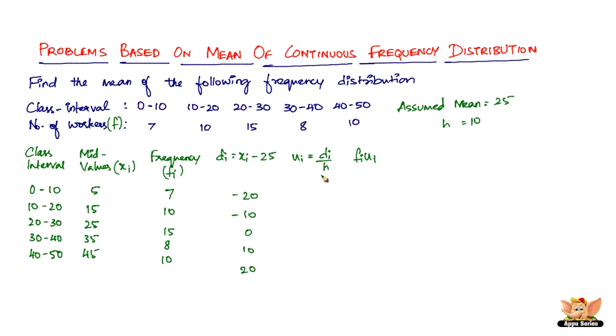And then we've got Ui equals Di by H. So Di by H is going to be minus 20 by 10, so it's going to be minus 2, minus 1, 0, 1, and 2. So Fi Ui is going to be minus 14, 10 times minus 1 is minus 10, 15 times 0 is 0, 8 times 1 is 8, and 10 times 2 is 20.